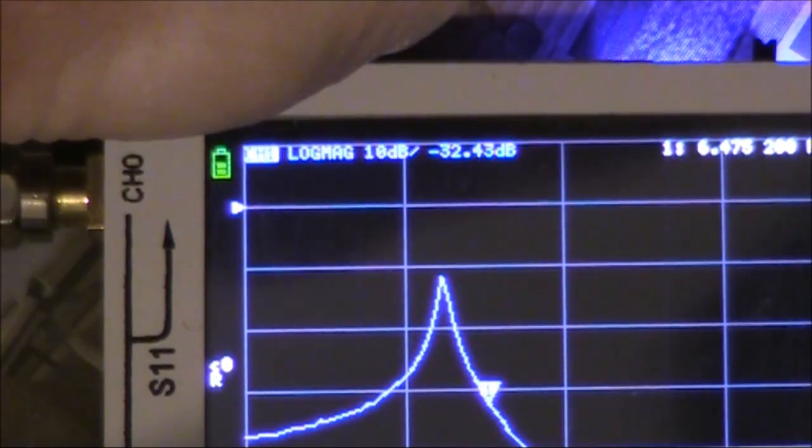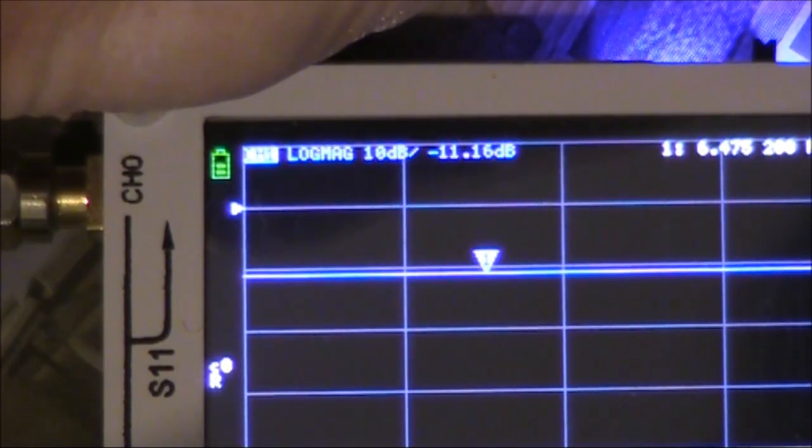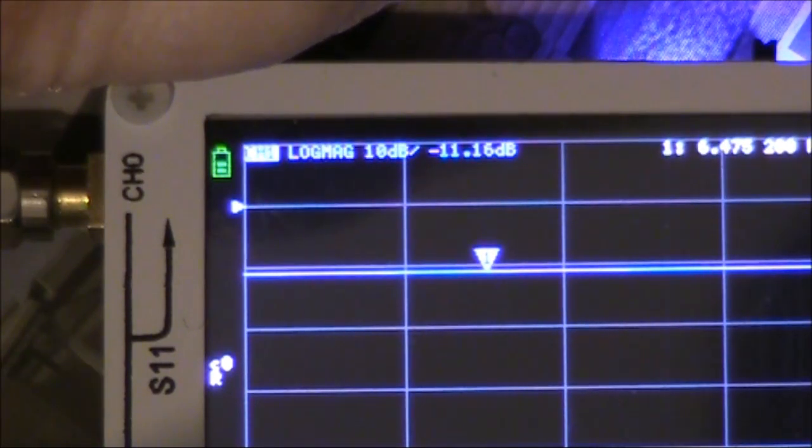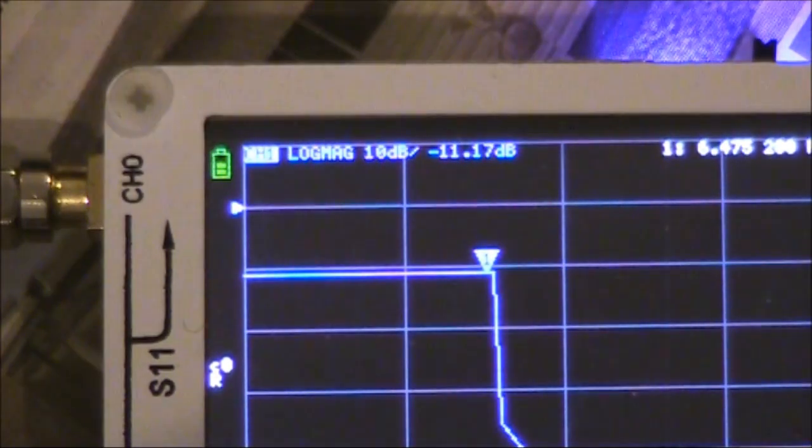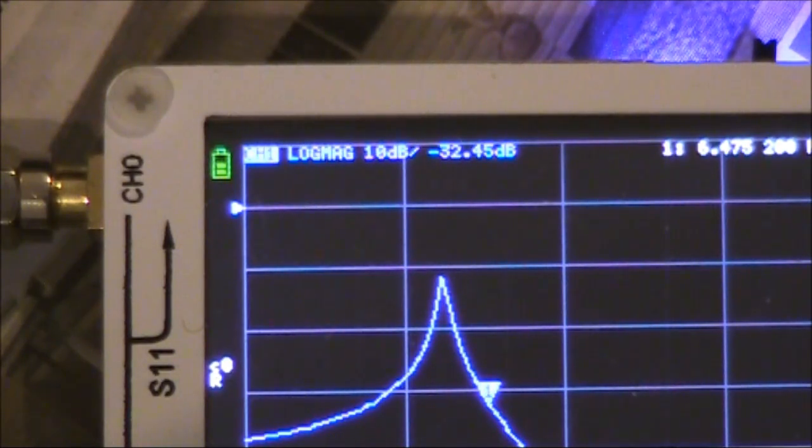I'll just do a comparison. Shorting out the crystal and it's a straight line. Put the crystal in circuit and it's back.